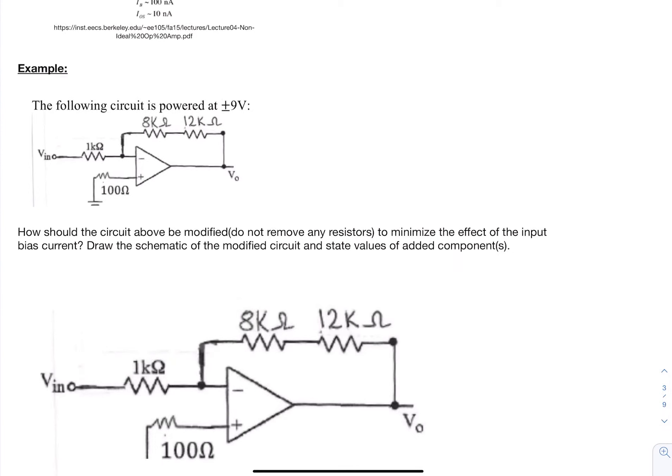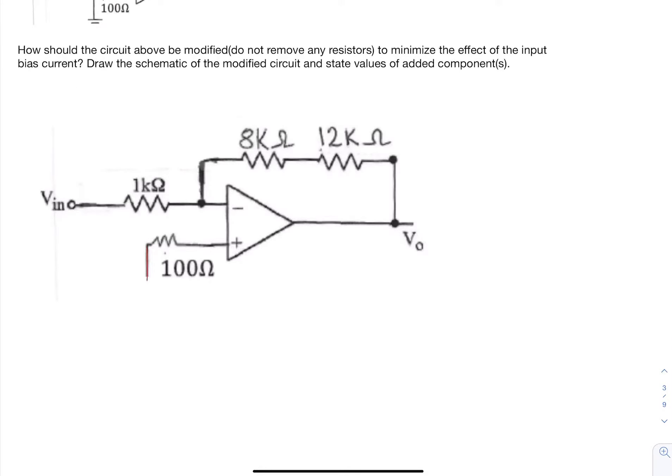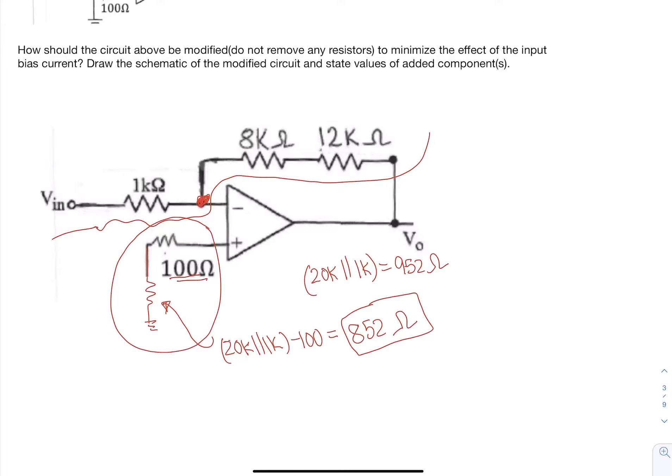So what we want to do is modify this circuit to minimize the effect of the input bias current. And so what we want to do is add a resistor here so that the whole equivalent resistance on this side is equal to the equivalence on that side. So we can see that that's going to be 20k in parallel with 1k. But we already have this 100 ohm resistor here. So we're going to put this value at 20k in parallel with 1k minus 100. And so that gives us a value of 852 ohms. So we're going to put an 852 ohm resistor here and the equivalent of that adds up to be 952 ohms, which is what is seen at this node. And so that's going to minimize the input bias current.